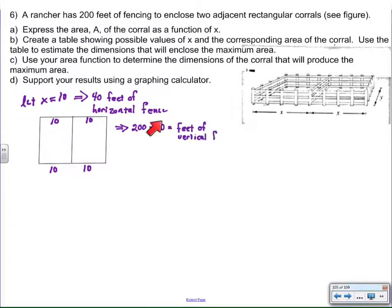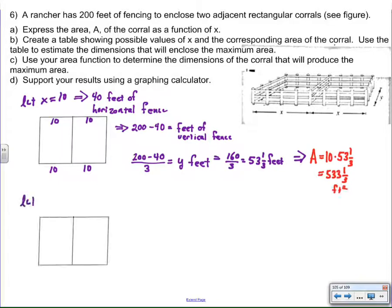And so I have to start with figuring out that I've used up 40 feet of the horizontal fencing. If I subtract 40, that's going to give me 160 feet left over for all three of these sides. So if there's 160 feet for all three of these sides, then one of these sides is going to be one third of that number. In other words, if I take that 160 divided by 3, that gives me the y dimension. Now I have enough to calculate the area, and the area is going to be 10 times 53 and a third, or 533 and one third square feet.